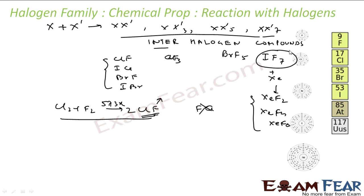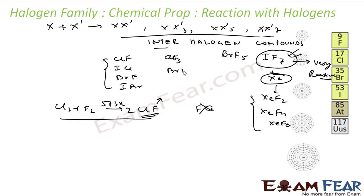IF7 reacts even with noble gases — it is very, very reactive. Rarely are there compounds that react with noble gases. For XX3, examples can be CLF3, BrF3, ICl3, or IF3.